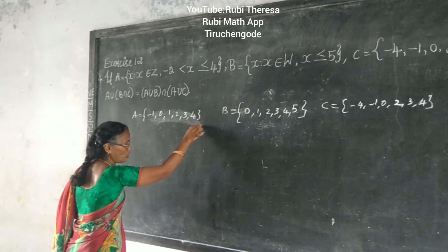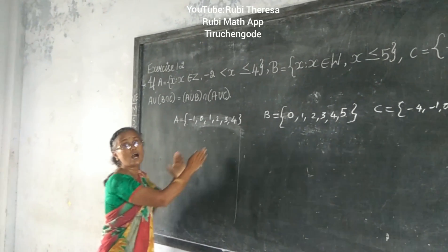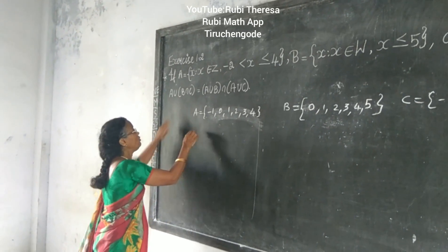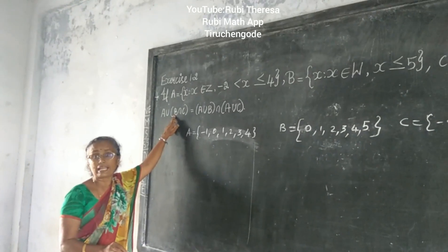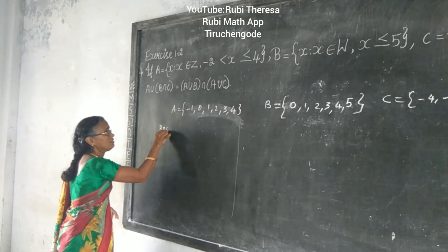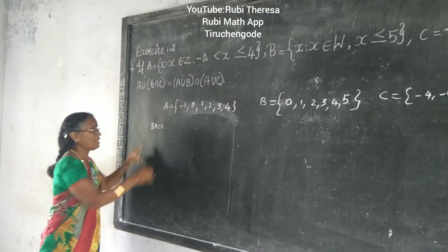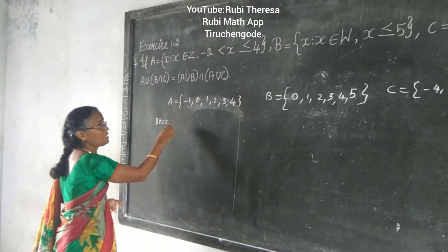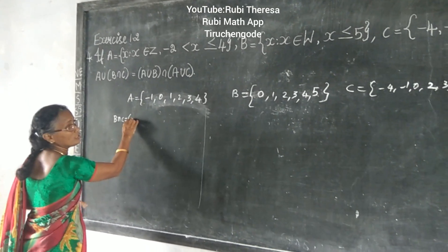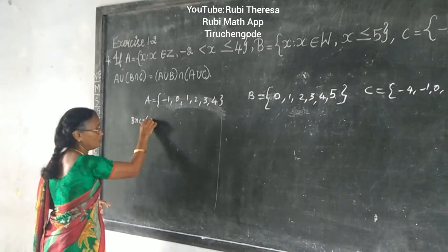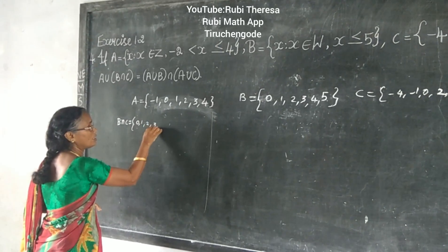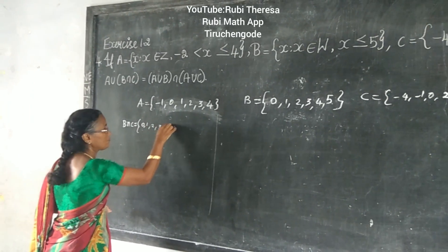Better to draw a line. That is LHS or RHS. What is given inside the bracket? B intersection C. First you find out B intersection C. What is B? One of you tell me the elements. B is: 0, 1, 2, 3, 4, 5. Very good.